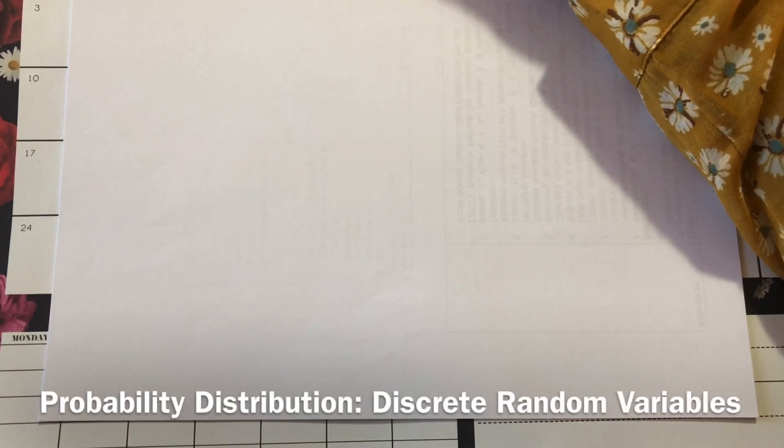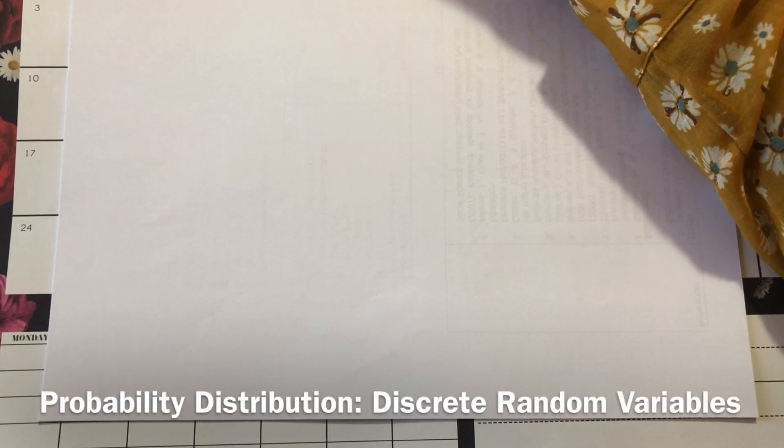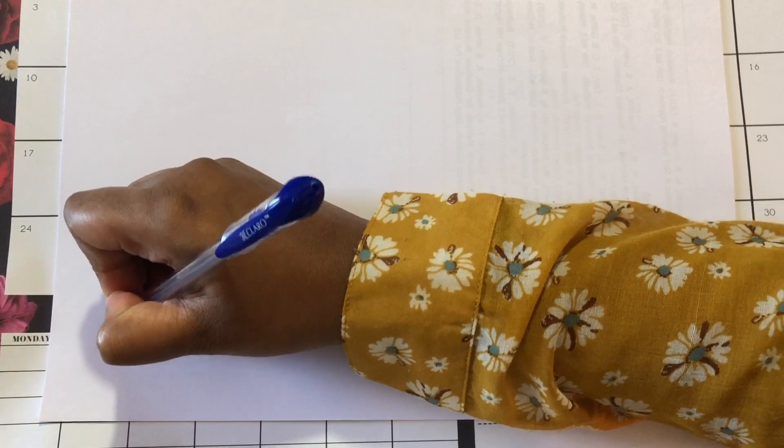Hi everyone, following our previous lecture, we have seen discrete random variables where a discrete random variable X represents the values assigned in an experiment or survey. Suppose we have x1, x2 up till xn which represents the possible values in an experiment.